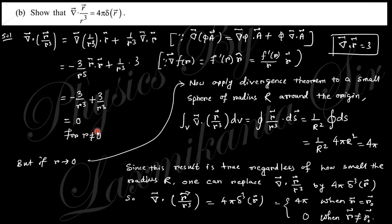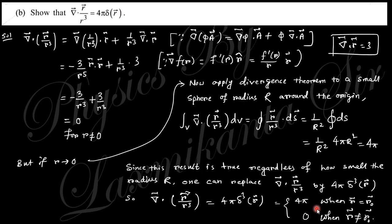But if R equals 0, what happens? Applying the divergence theorem with a small sphere of radius R around the origin, taking the volume integral gives the surface integral form: 1/R² · dS. This gives R-cap/R², and integrating over the sphere surface (area 4πR²) finally gives 4π. Since this result is true regardless of how small the radius R, one can replace this by 4π·δ³(R) in three dimensions, where δ³(R) is the 3D delta function. So this is 4π when R = 0, and 0 when R ≠ 0.